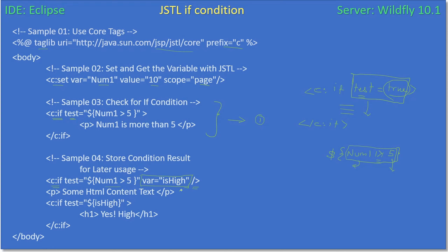The variable isHigh will hold the value true or false. The condition is evaluated and assigned to the test attribute. We saw that C:if will execute the body when test equals true. Here, instead of executing a body directly, we assign the output to the variable isHigh — so isHigh will also hold true or false.